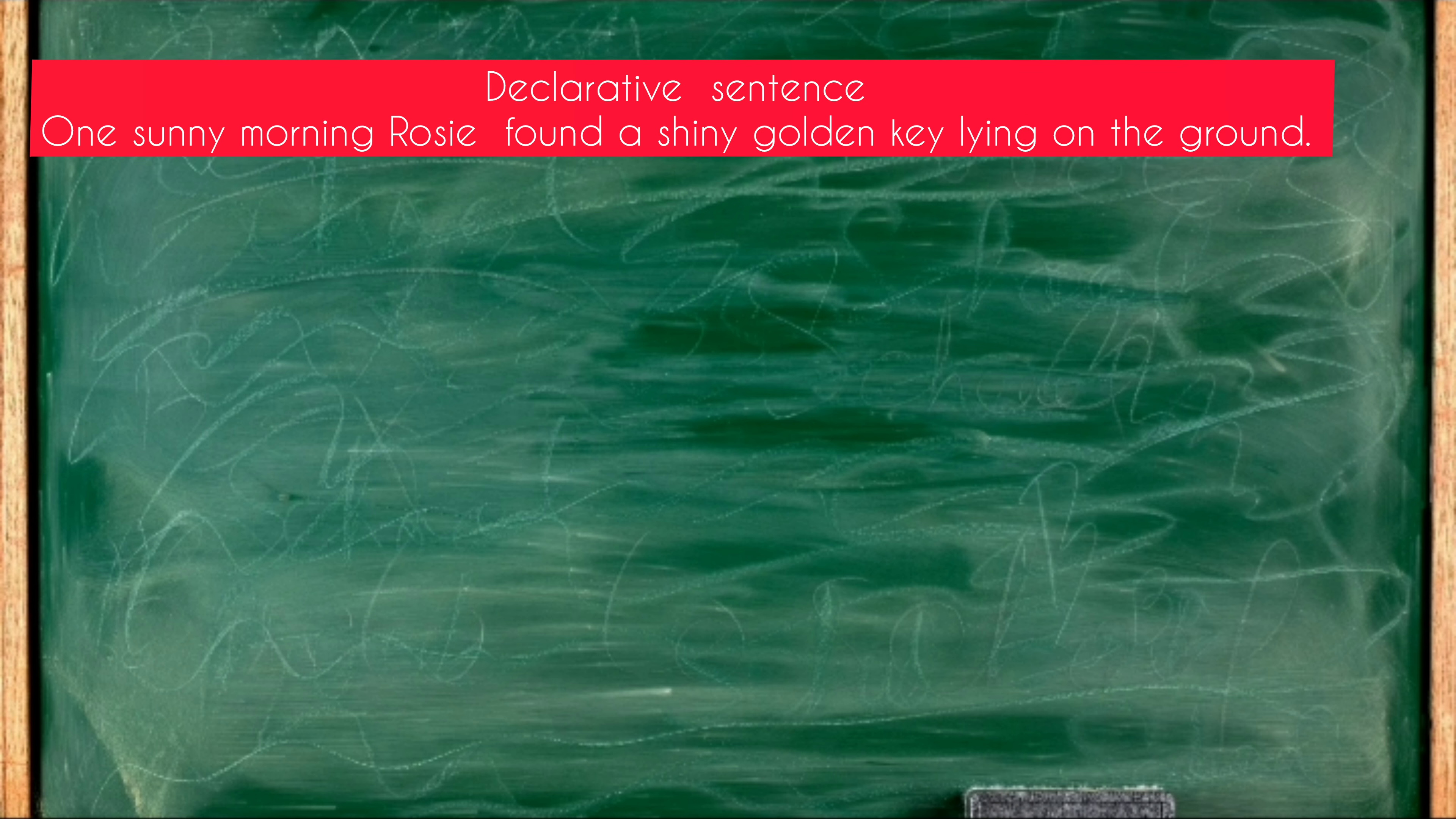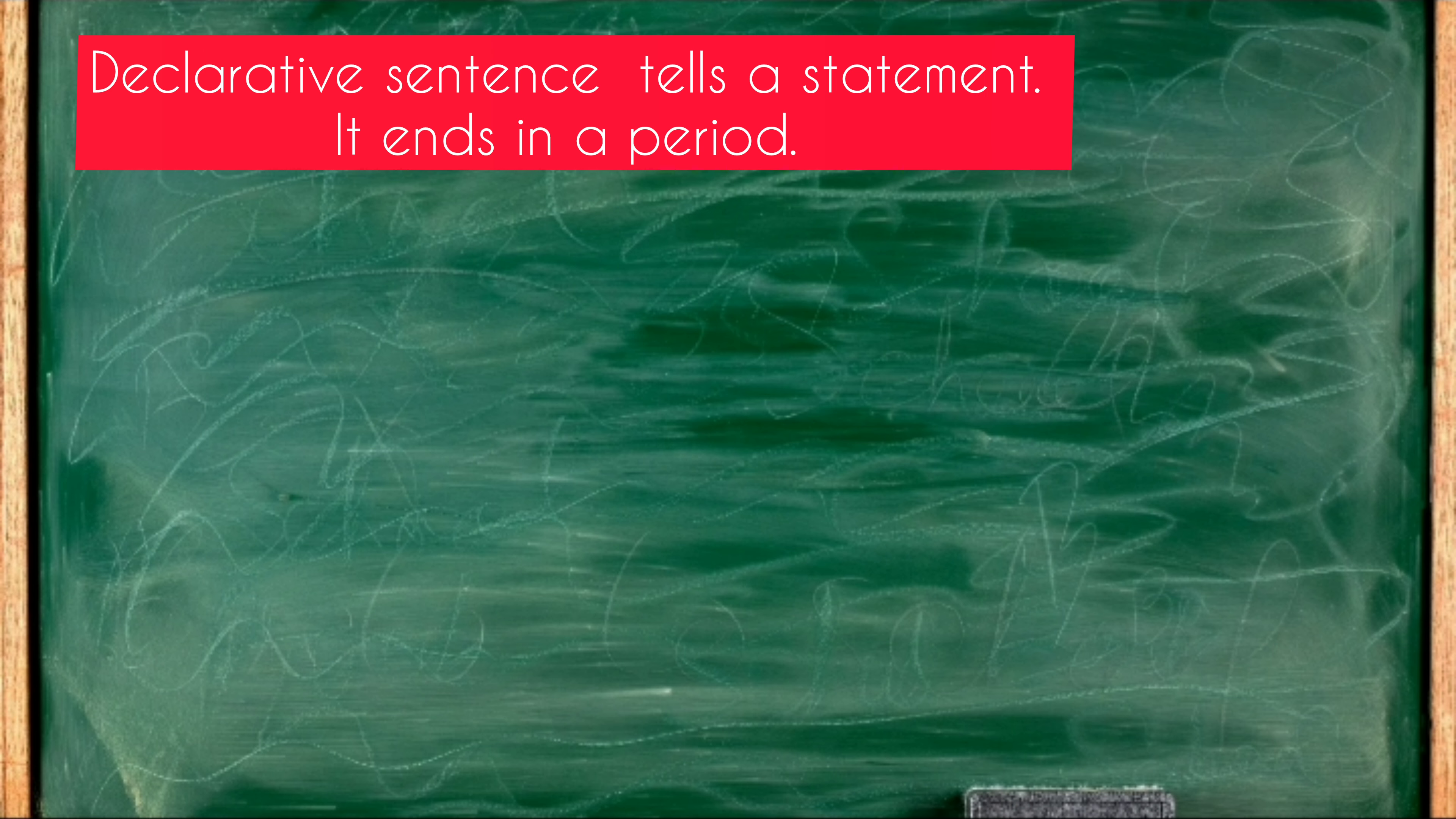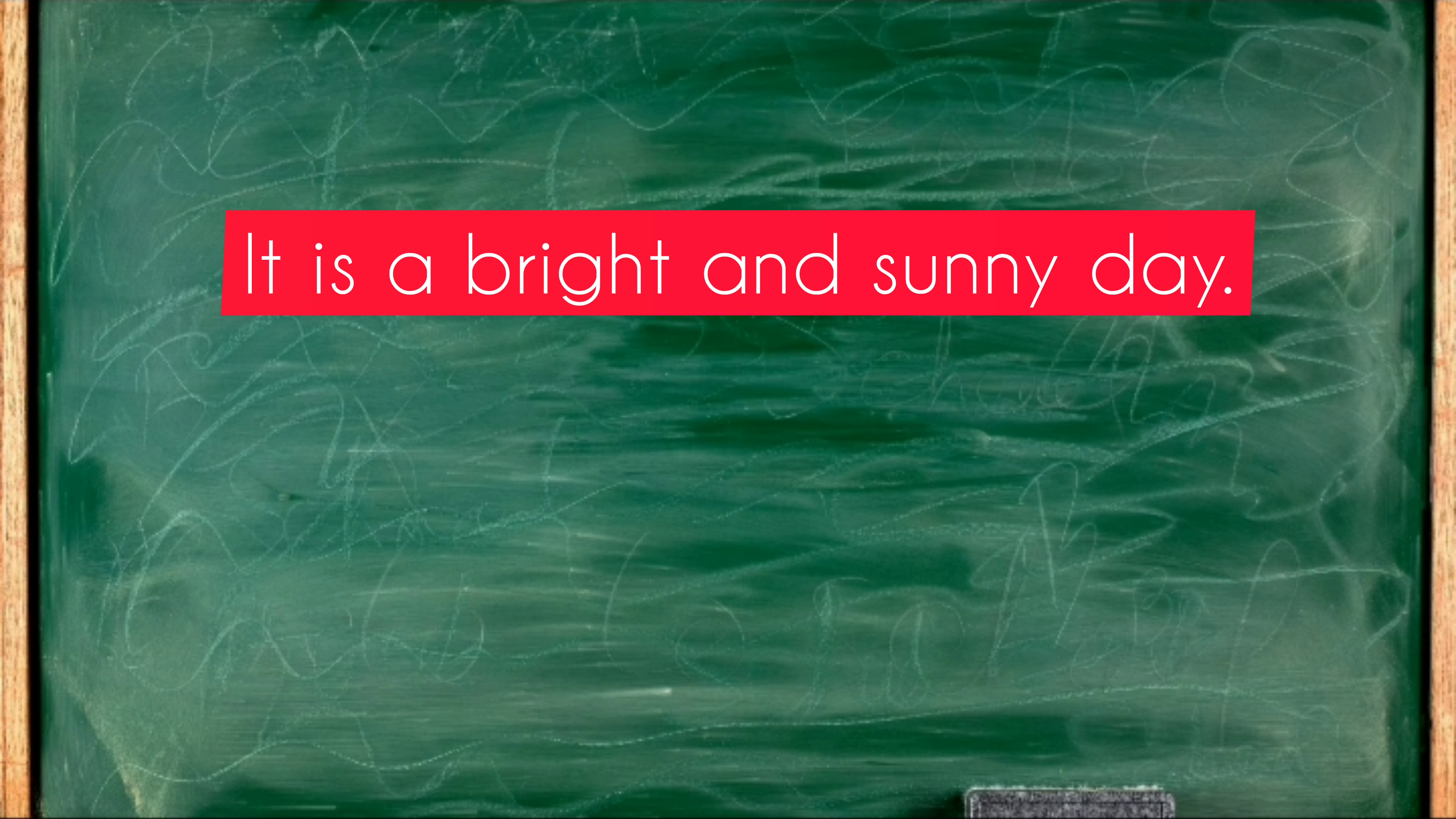One sunny morning, Rosie found a shiny golden key lying on the ground. So, this is a declarative sentence. Declarative sentence tells a statement and it ends in a period. It is a bright and sunny day. Ends with a period.